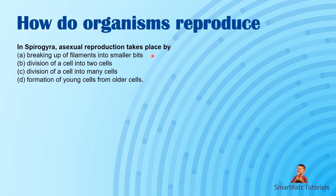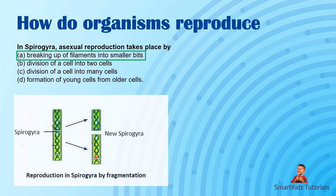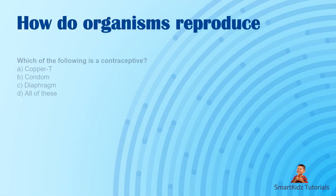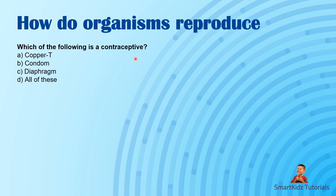In Spirogyra, asexual reproduction takes place by fragmentation — breaking up of filaments into smaller bits. Which of the following is a contraceptive? All of these — copper T, condom, and diaphragm — are different forms of contraception.